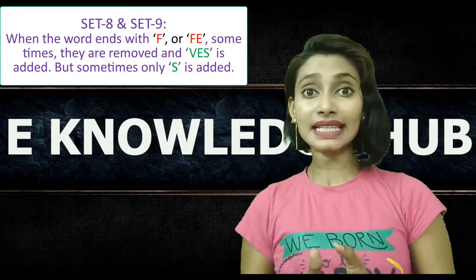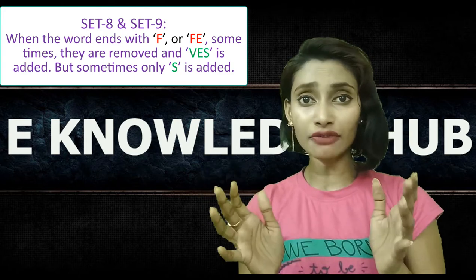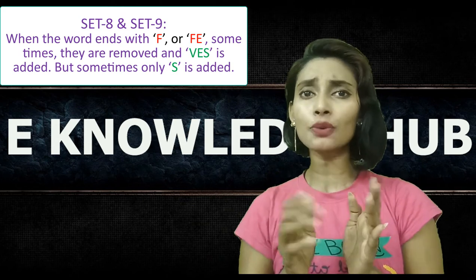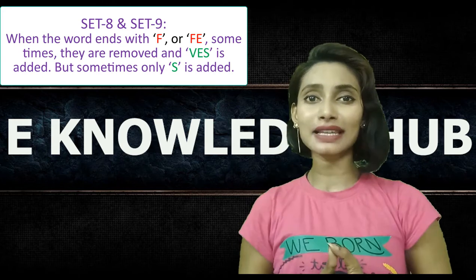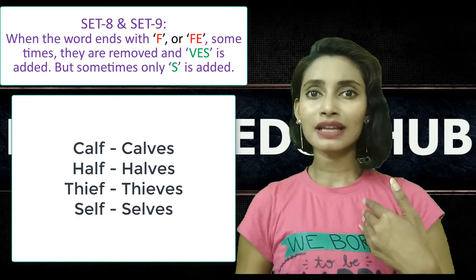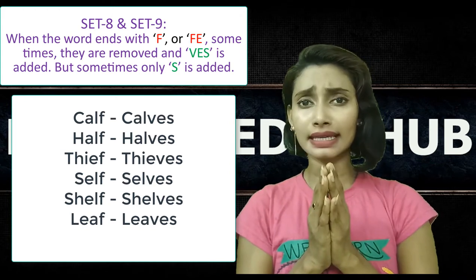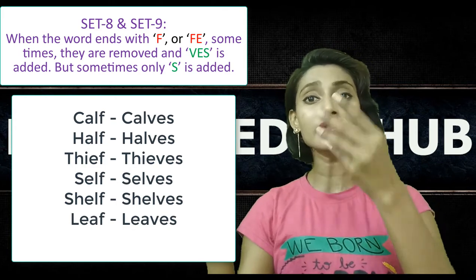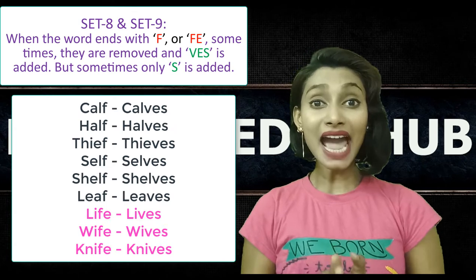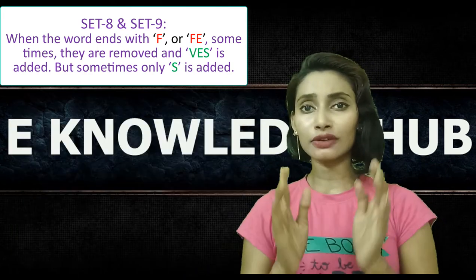Now let's see set 8 and set 9. In these sets, the nouns end with letter F or FE. There is no hard and fast rule here because some words take S and some words take ES, with no specific rule — only through practice can we master them. In set 8, nouns end in F and they take ES after replacing F with V. Similarly: life, lives; wife, wives; knife, knives — these words end in FE and the FE is replaced with V before adding ES.